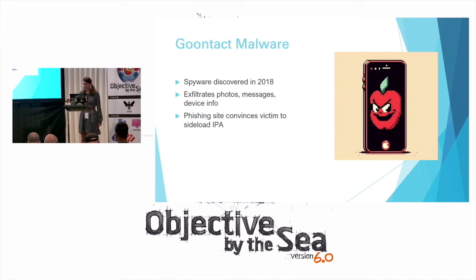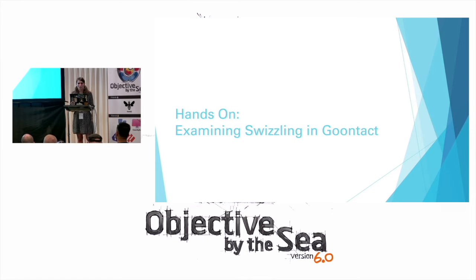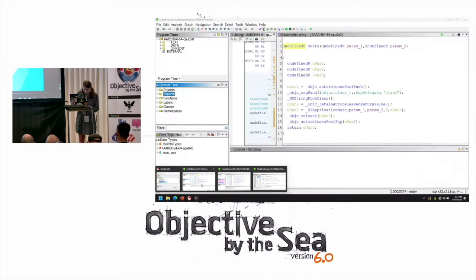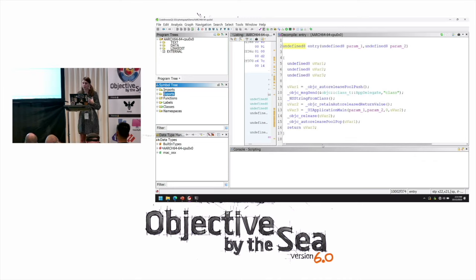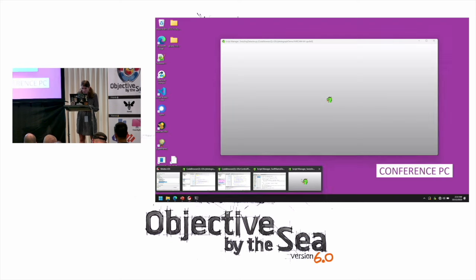We're going to look at our second case study: the Goontact malware family. This was spyware discovered back in 2018 which exfiltrates photos and messages and steals device info to extort its victims. These were located on phishing sites that tried to convince users to sideload iOS IPA files onto their device. Let's do our hands-on and look at some swizzling that Goontact actually uses. I'm going to go back to my Ghidra instance and open up a second script that will identify potential swizzling inside of the application.